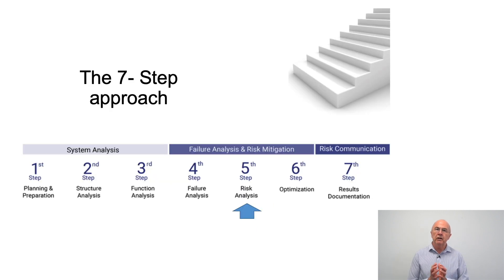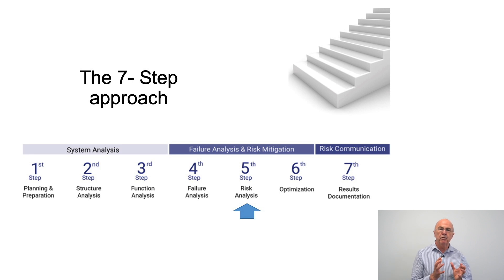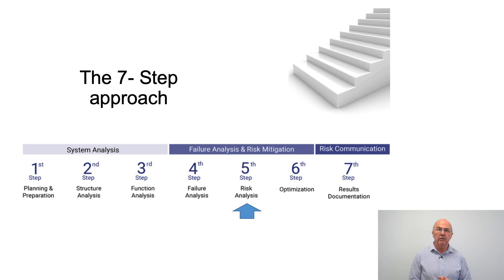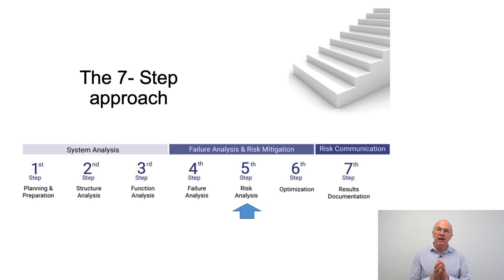Just a very quick recap on this seven-step approach. The first three steps are about system analysis, which is far more detailed than the AIAG fourth edition manual. We then go into failure analysis and risk mitigation, and today we are looking at step five, risk analysis.